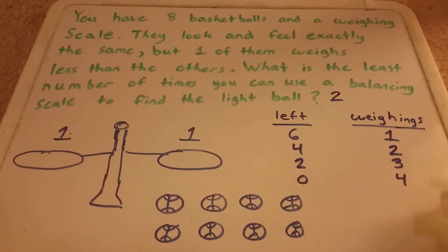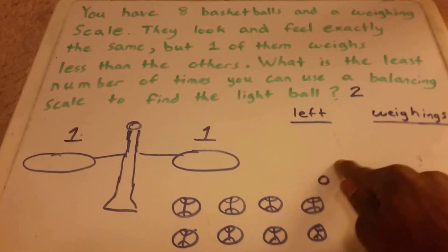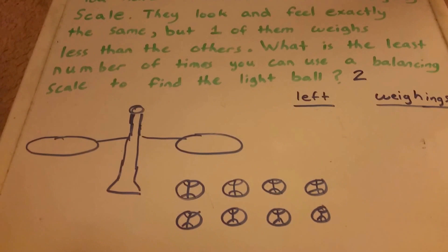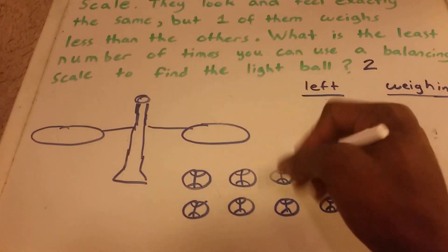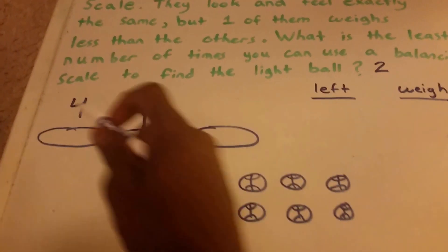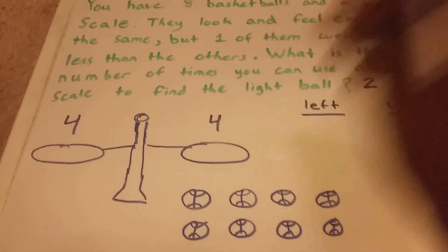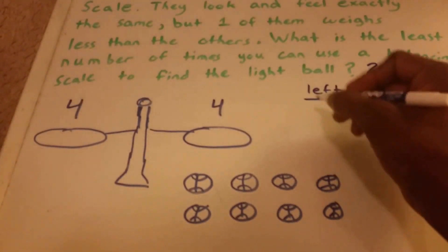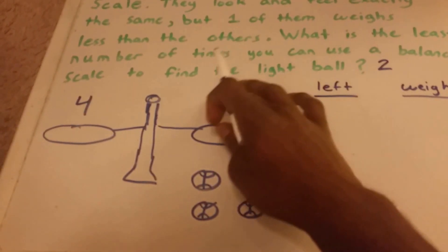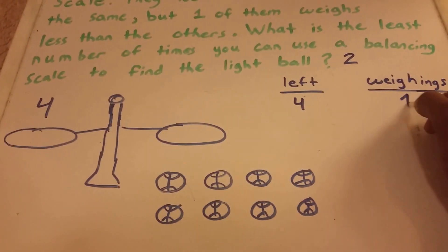There's obviously a more efficient way to do this. Another method would be to take half the balls and split them up — put four balls on each side. One side is going to weigh less than the other, so we throw out the four heavier balls. Now we have four balls left, and that was one weighing.